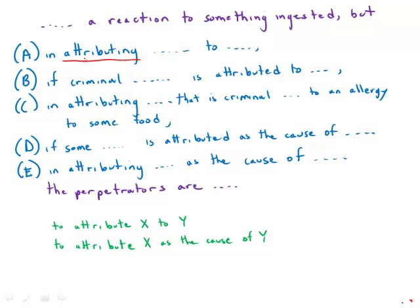Attributing, the participle, modifies the next noun. By the modifier touch rule, the very next noun that follows this clause is the one that is doing the attributing. But the very next noun that follows are the perpetrators.